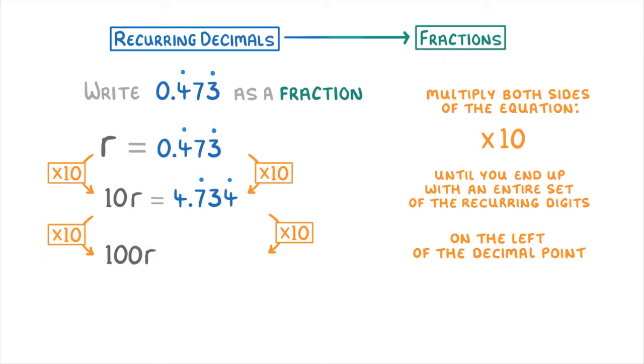Times 10 again gives us 100r equals 47.347 recurring, and times 10 once more gives us 1000r equals 473.473 recurring.